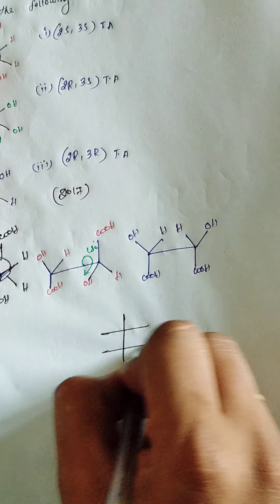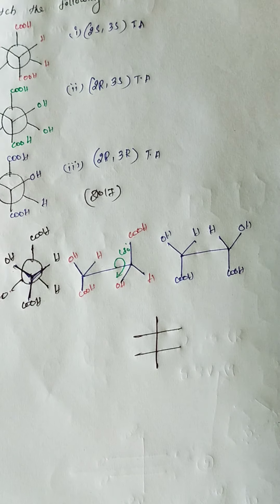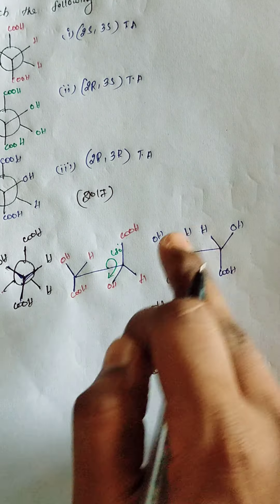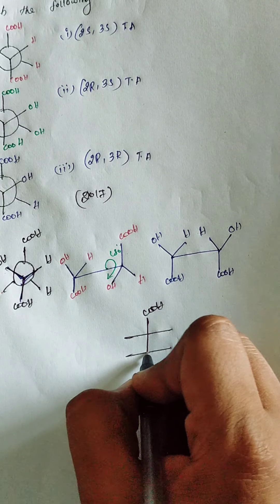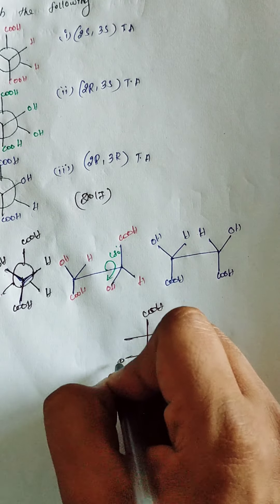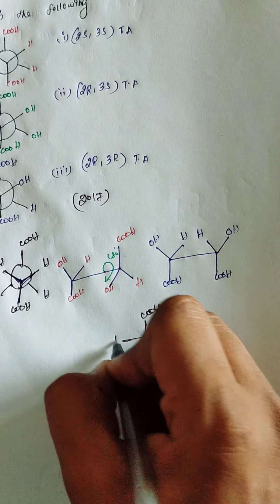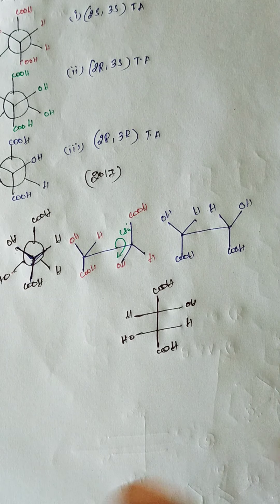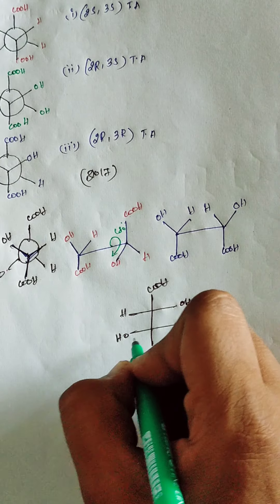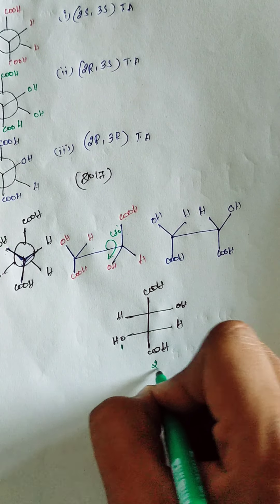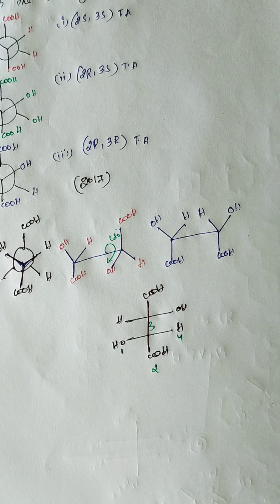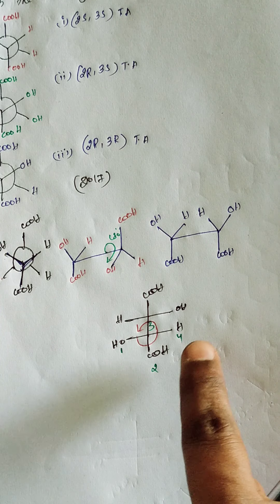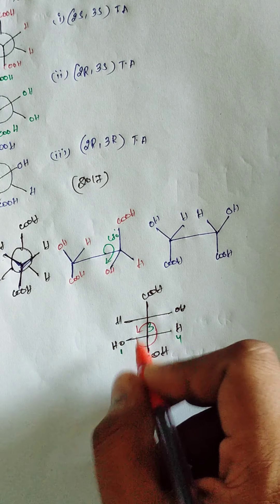Drawing the Fischer projection from the Newman — top level has COOH and COOH. For the front carbon, right-hand side has H and OH. Now assigning configuration: on the front carbon, priority order is 1, 2, 3, 4. Rotating 1→2→3 is in the anti-clockwise direction, but the least priority group (4) is in the horizontal position, so anti-clockwise becomes R configuration.